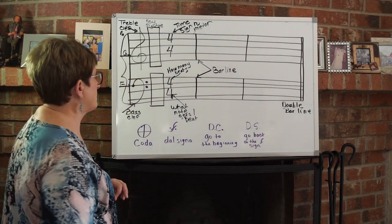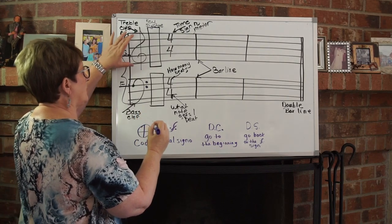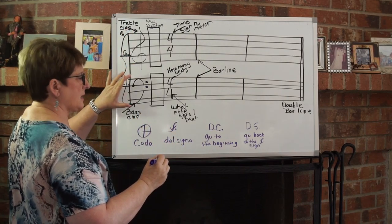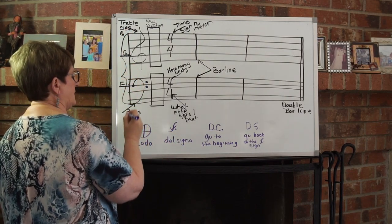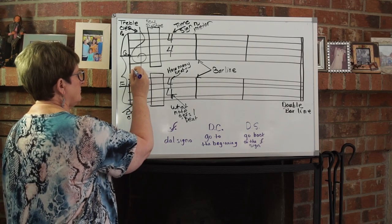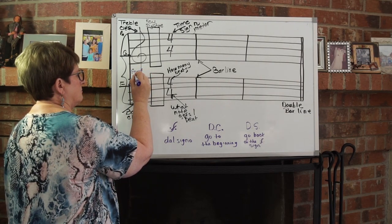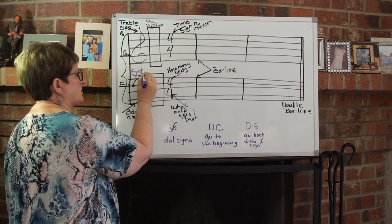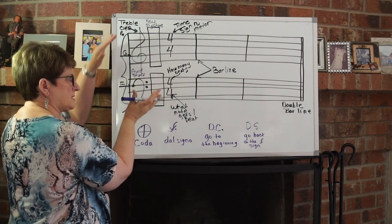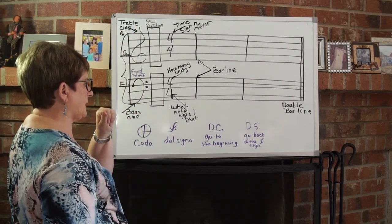When you have a bracket that goes like this and combines the treble clef and the bass clef together, that's called the grand staff. When we are doing multiple parts, guy parts, girl parts written separately, it puts it all together for us in one package.